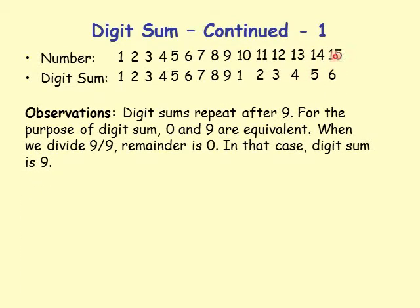For 15: 1 plus 5 is 6, digit sum is 6. Dividing 15 by 9 gives remainder 6.